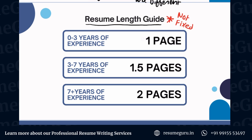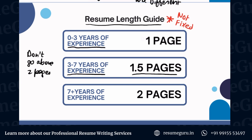Now let's discuss what the ideal resume length should be. Bear in mind this is not fixed — it depends from field to field. This is just a general guideline. If you have around 0 to 3 years of experience, you can comfortably make a single-page resume. If you have 3 to 7 years of experience, you can go with a 1.5-page resume. And if you have more than that, you can go 2 pages. Don't go above 2 pages.